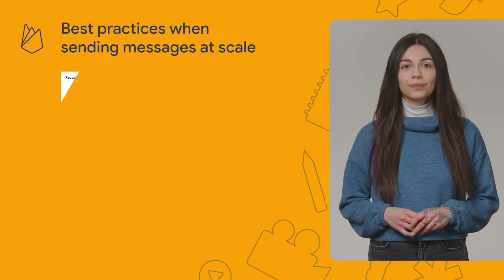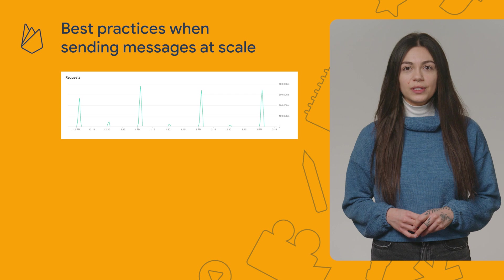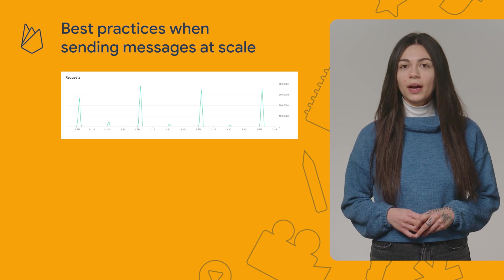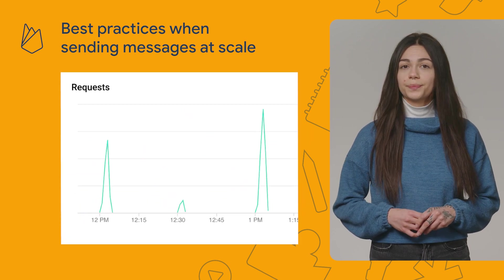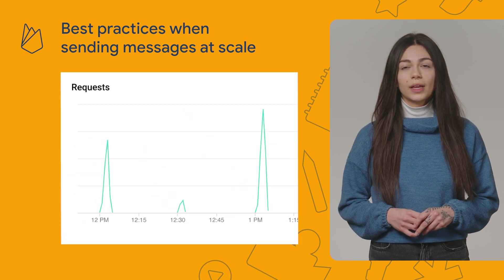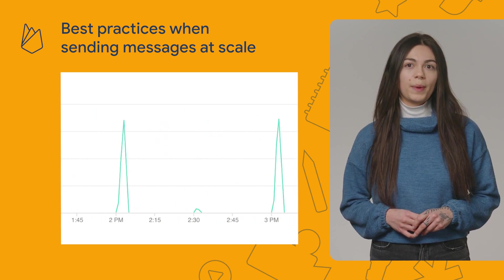Now that you know the key terms and concepts, let's talk about the best practices when sending messages at scale. If we look at the FCM servers, we see that the number of API calls look like this. You'll see that we have lots of spikes, and many of these are periodic.